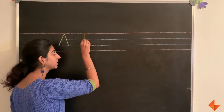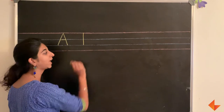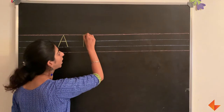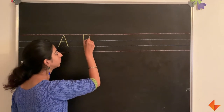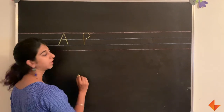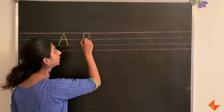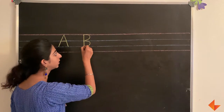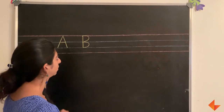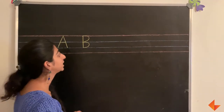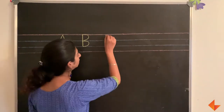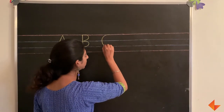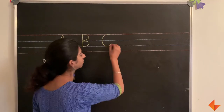To write the letter B, draw a standing line, draw one curve, and draw another curved line. To write the letter C, draw a curved line.